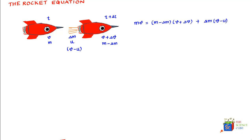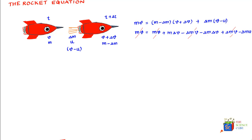Let's simplify this equation. On the left hand side we have mv, and on the right hand side we get mv plus m·delta v minus delta m·v minus delta m·u. We can see that many terms cancel off: mv cancels, and delta m·v cancels. The term delta m times delta v would be a very small second-order term, so we can almost ignore it. Finally, what we get is that m·delta v is equal to u·delta m. This is an important equation.